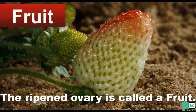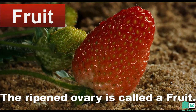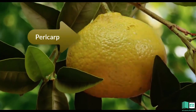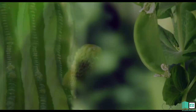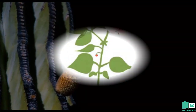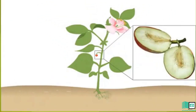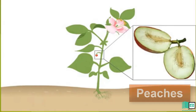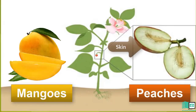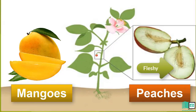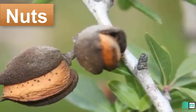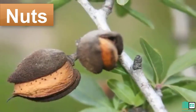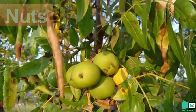Fruit: The ripened ovary is called a fruit. The ovary wall forms the fruit wall, called the pericarp. Inside the ovary, ovules develop into seeds. The matured fruit may contain single or many seeds. The pericarp has three layers in most fruits like peaches and mangoes. The outer layer is skin, the middle layer is fleshy, and the inner layer is tough or hard. Some fruits have hard and dry pericarp, for example nuts.